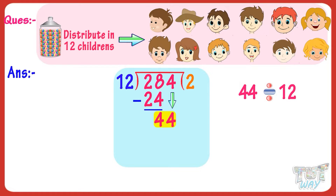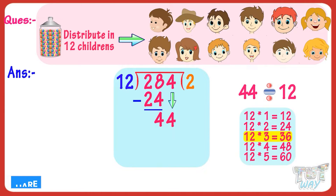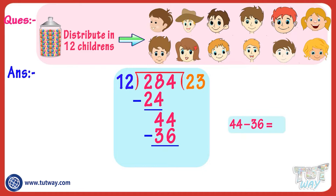Also, less than 44. 12 multiplied by 3 is 36. So, 36 is the nearest multiple of 12. So, write 3 in the quotient and 36 below 44. Subtracting 36 from 44, we get 8.